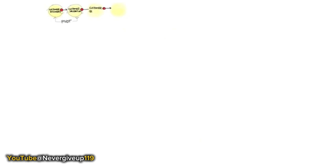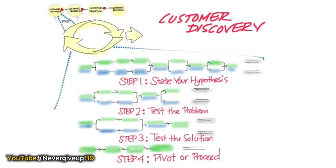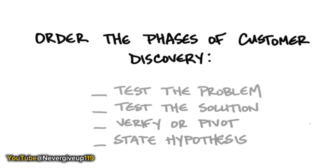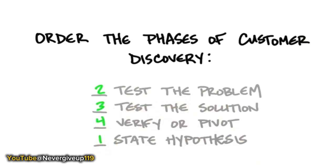Let's look at customer discovery one more time in a different way. If you're using the Startup Owner's Manual, you'll notice two tracks - one for physical products, one for web and mobile. All that differs are the tactics for one channel versus another, but the strategy is the same: state your hypothesis, test the problem, test the solution, pivot and proceed. All of this is happening outside the building, in front of customers.